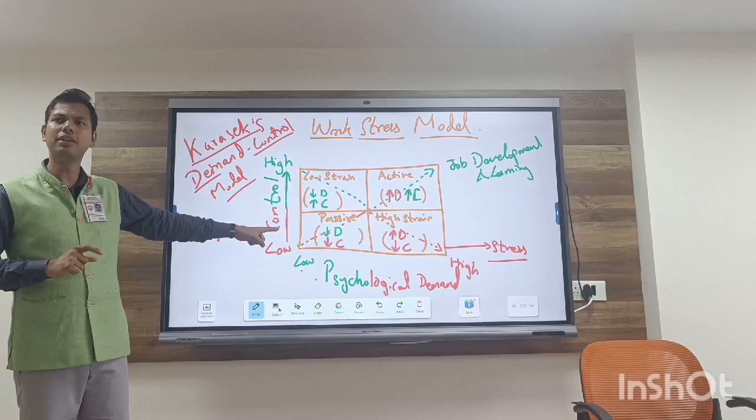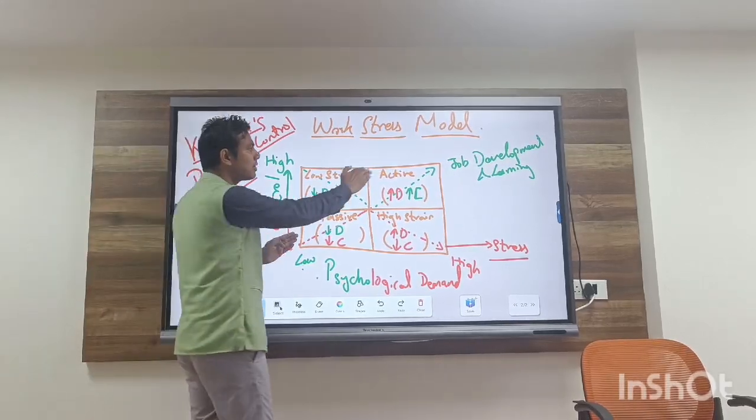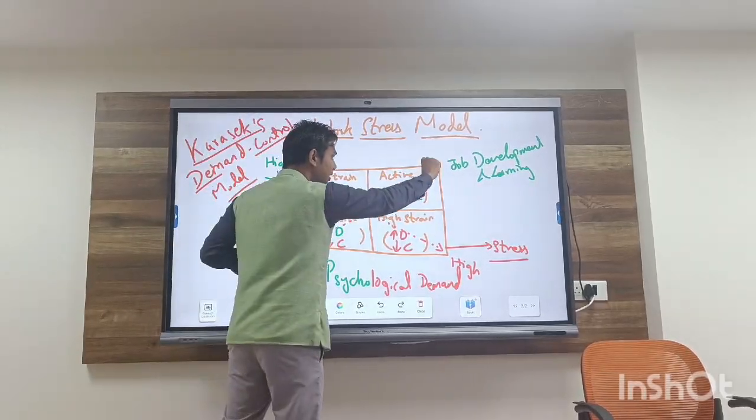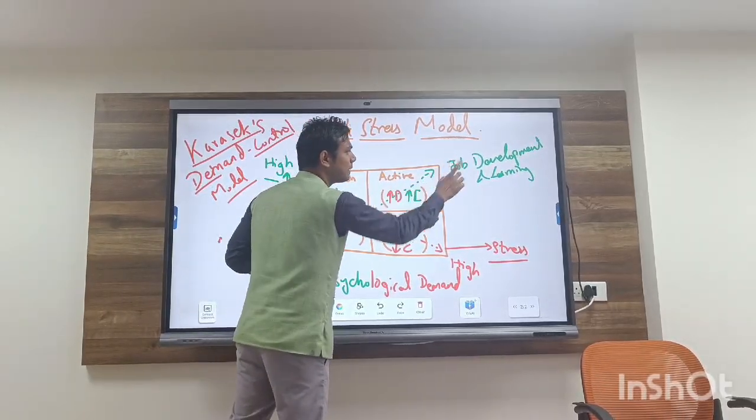Can you see one more line? When we are talking about passive task, that is active task. Can you see this thin line which talks about job development and action?